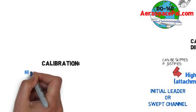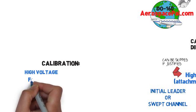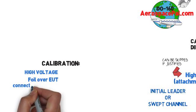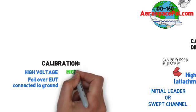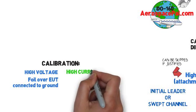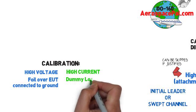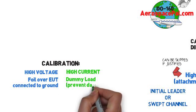Calibration of the high voltage test will require foil over the EUT connected to ground, while calibration of the high current test will typically require a dummy load to strike on so that your EUT is not damaged during calibration.